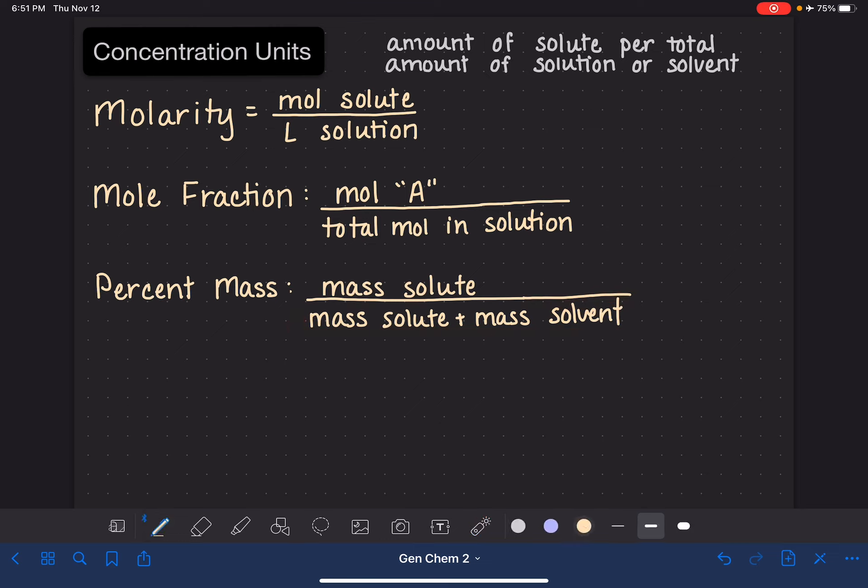Not just the mass of the solvent itself. And then of course, since this is a percent, we have to multiply it by 100. The mass unit used here is typically grams, but it doesn't matter which mass unit you use, as long as you use the same mass unit the whole way through this equation.